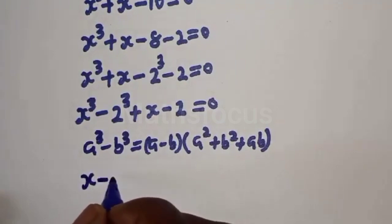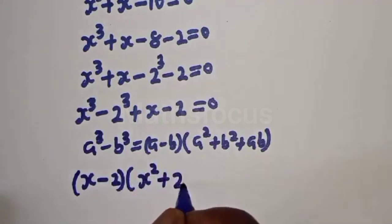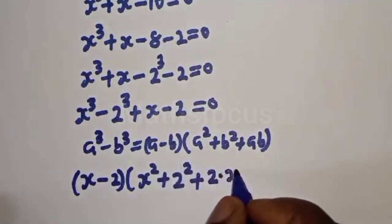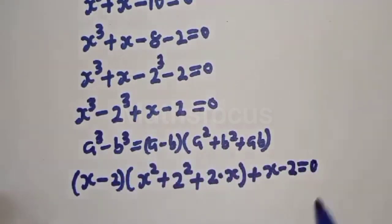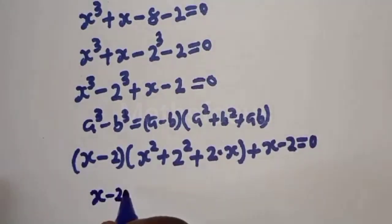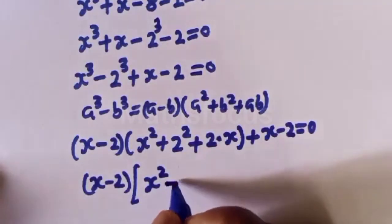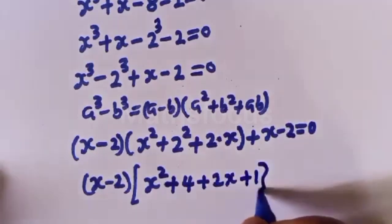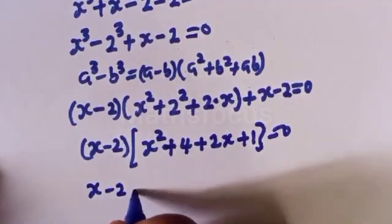Applying this rule, we get s minus 2, bracket s squared plus 2 squared plus 2s, plus s minus 2, equal to zero. Then s minus 2 is common, giving us s minus 2 bracket s squared plus 4 plus 2s plus 1 equal to zero.